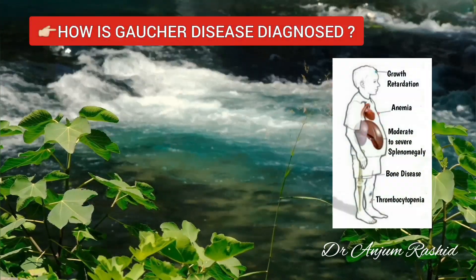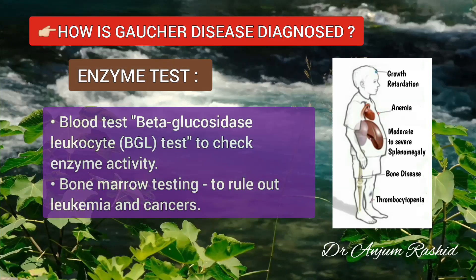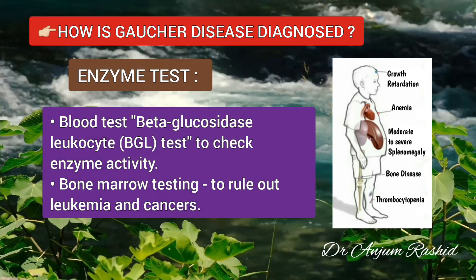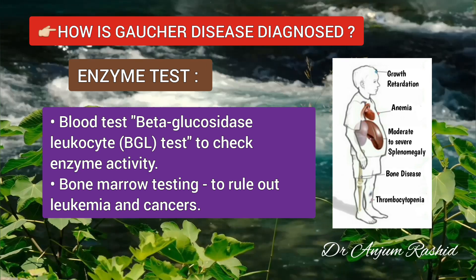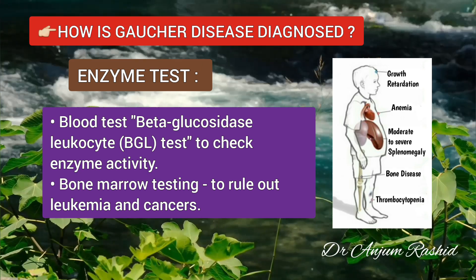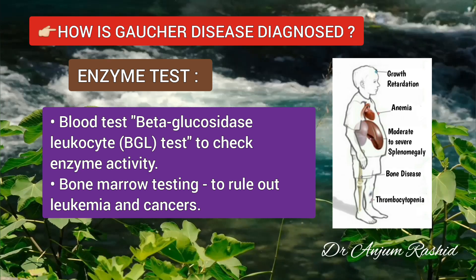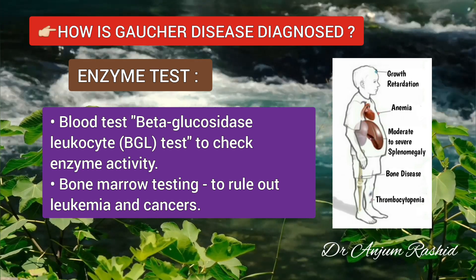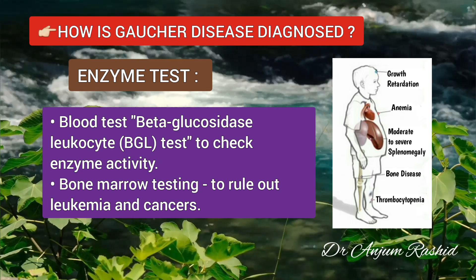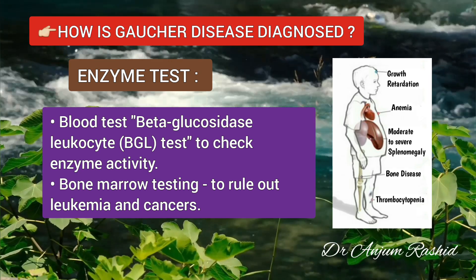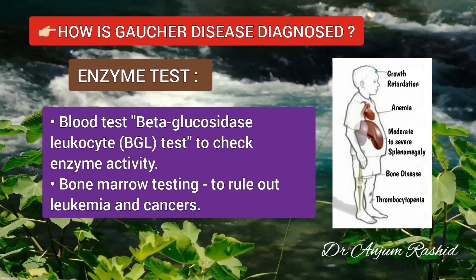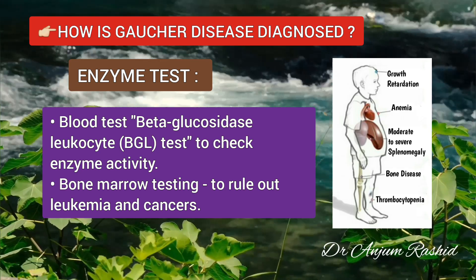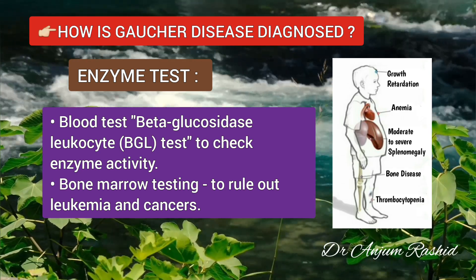How is Gaucher disease diagnosed? First is the enzyme test. Doctors use a standard blood test called the beta-glucosidase-leukocyte test to check enzyme activity and diagnose Gaucher disease. However, a pediatrician may notice an enlarged spleen, bleeding problems and low platelet count without initially considering Gaucher disease. Many patients undergo invasive bone marrow testing before receiving a diagnosis, as doctors try to rule out leukemia and bone cancers.